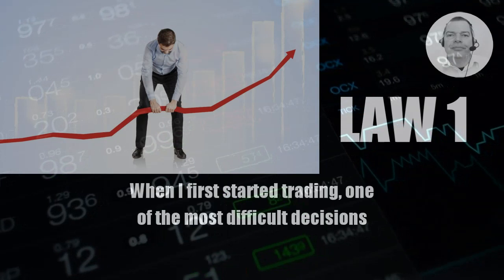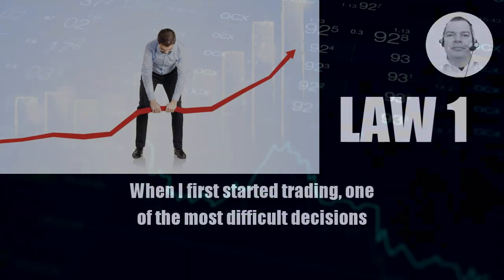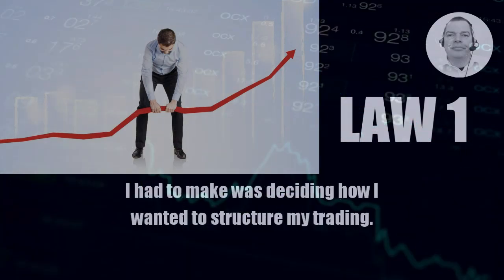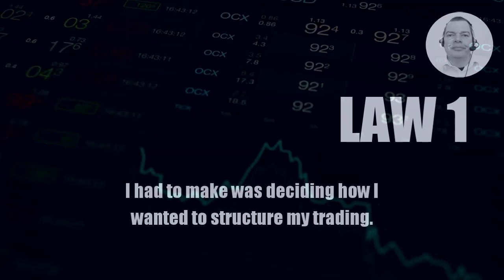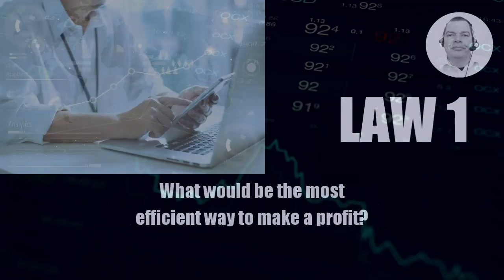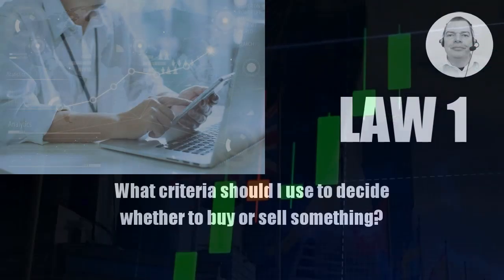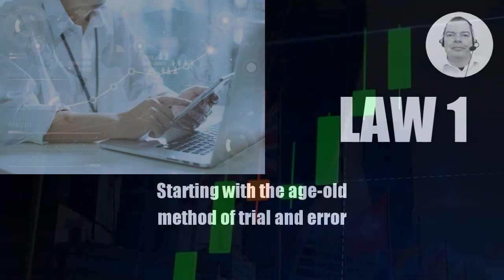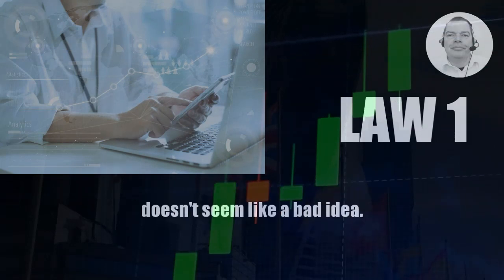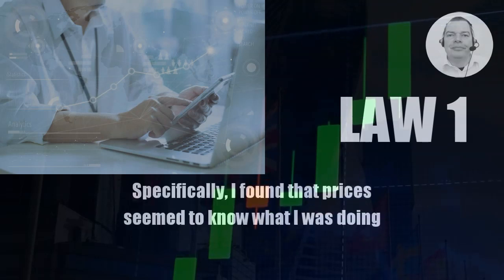When I first started trading, one of the most difficult decisions I had to make was deciding how I wanted to structure my trading. What would be the most efficient way to make a profit? What criteria should I use to decide whether to buy or sell something? Starting with the age-old method of trial and error doesn't seem like a bad idea, specifically.